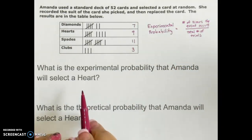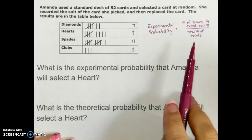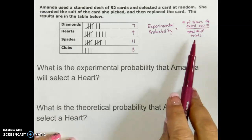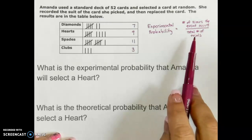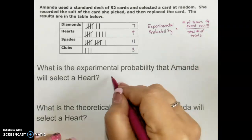The first question that we're going to take a look at is what is the experimental probability that Amanda will select a heart? So just a quick reminder from our definition, experimental probability is going to be found by looking at the ratio of the number of times the event occurs.